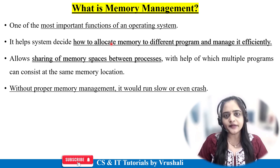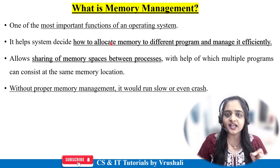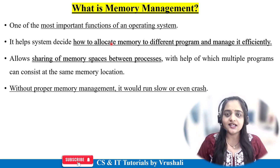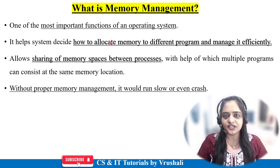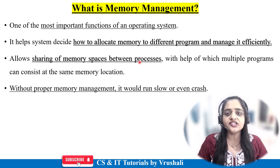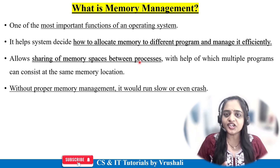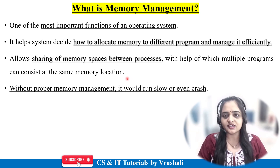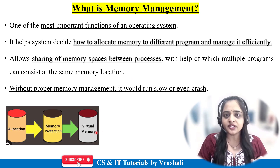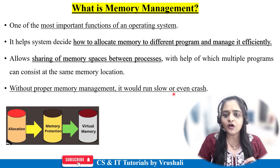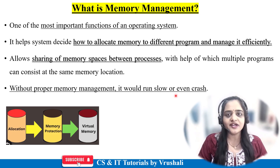In operating system there are multiple processes, and every process requires memory for execution. Like in your mobile there are multiple apps and every app requires memory for storing and execution. The operating system ensures that proper memory is allocated to each and every process for effective execution. Sometimes multiple processes share the common memory space, so the OS ensures that no conflicts occur. Without proper memory management your system would run slow or even crash — that's why memory management is important.